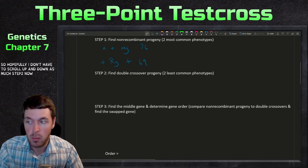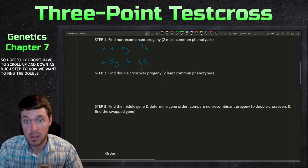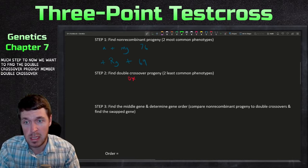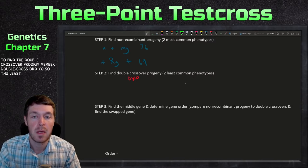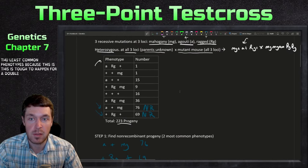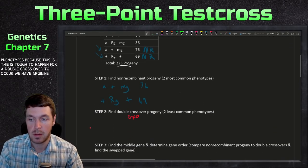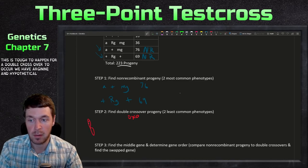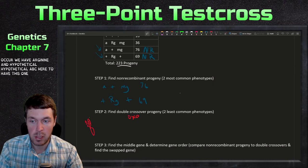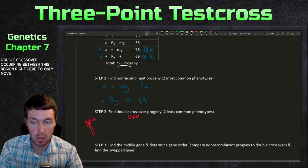Step two: find the double crossover progeny — these are the two least common phenotypes. A double crossover is tough to occur. On a hypothetical chromosome with A, B, C, you'd need a double crossover occurring between this region and between this region to only move the middle gene.